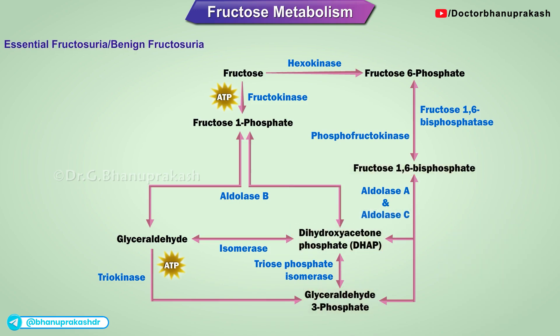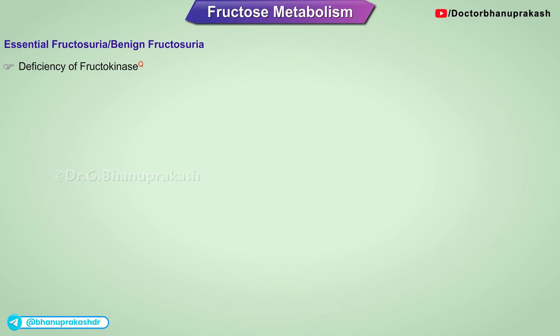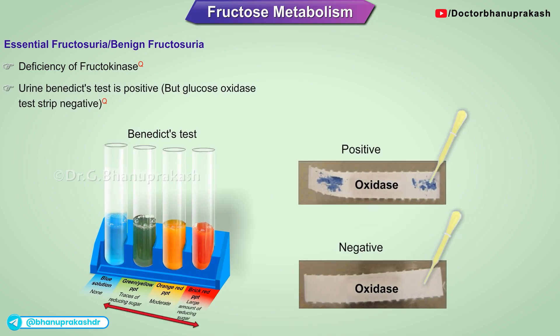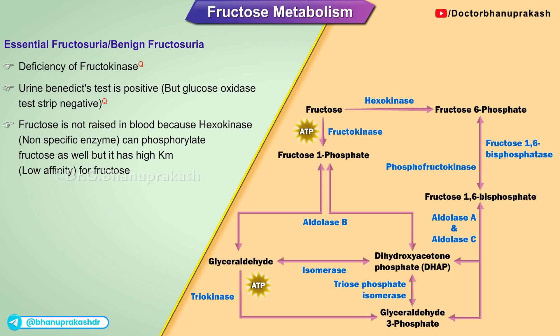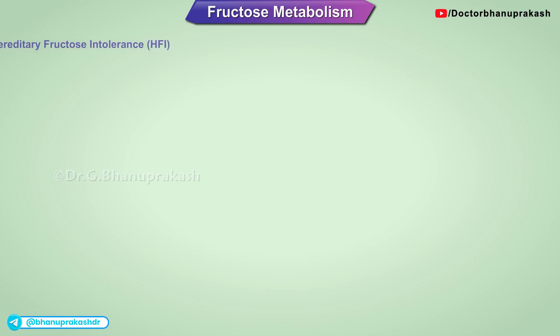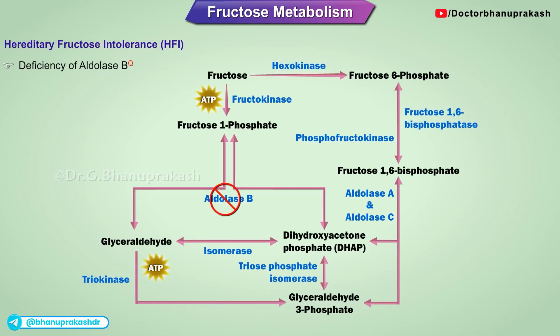Essential fructosuria, or benign fructosuria, involves a deficiency of fructokinase. It is an incidental finding when the urine Benedict test is positive but the glucose oxidase test strip is negative. Fructose is not raised in blood because hexokinase, a non-specific enzyme, can phosphorylate fructose as well, though it has high Km and low affinity for fructose. Fructose is excreted in urine due to lack of a renal threshold for fructose. Therefore, it is called essential or benign fructosuria, not fructosemia.